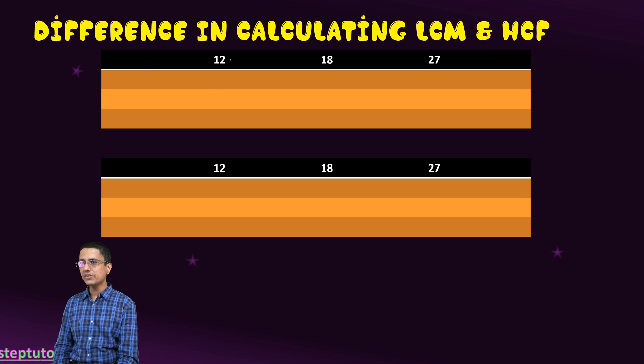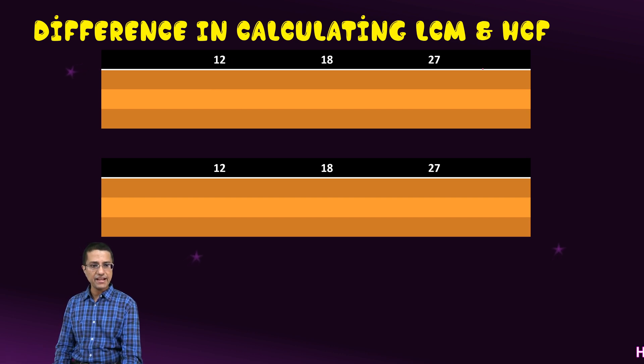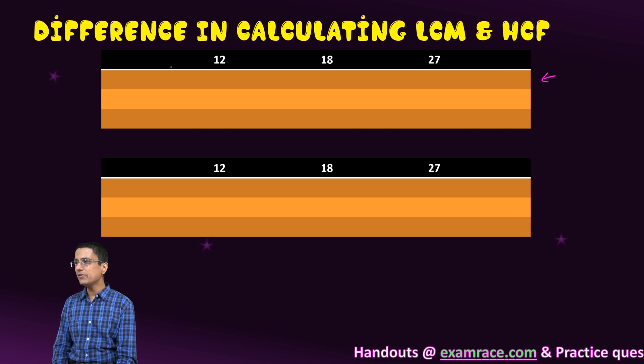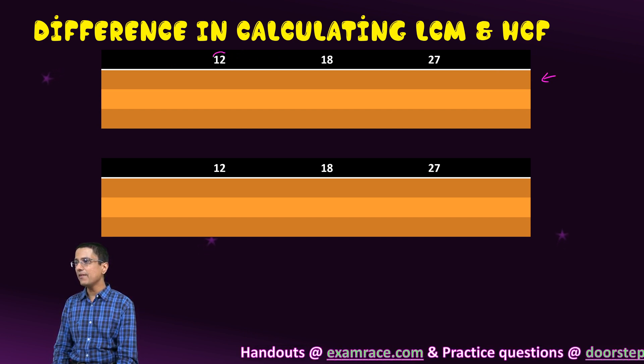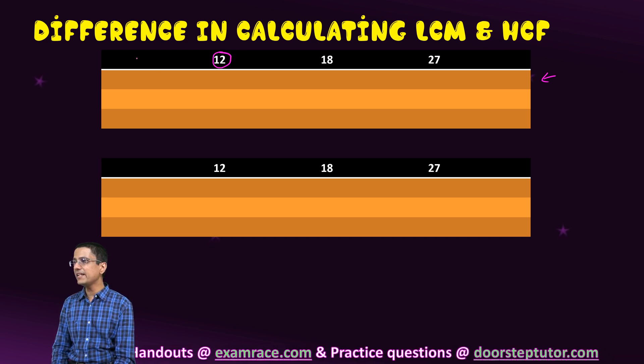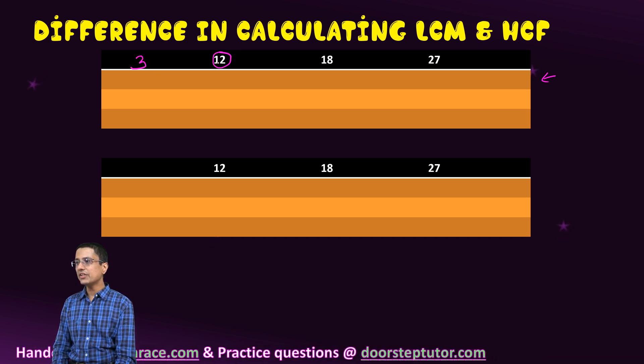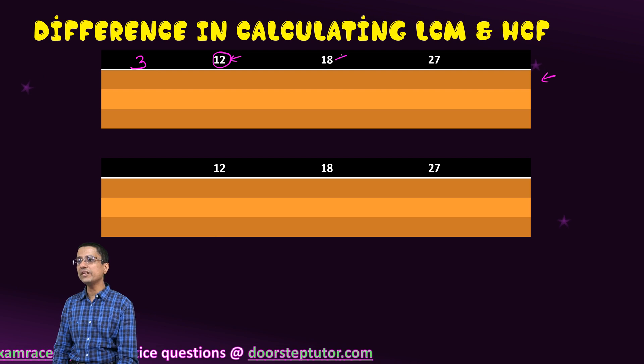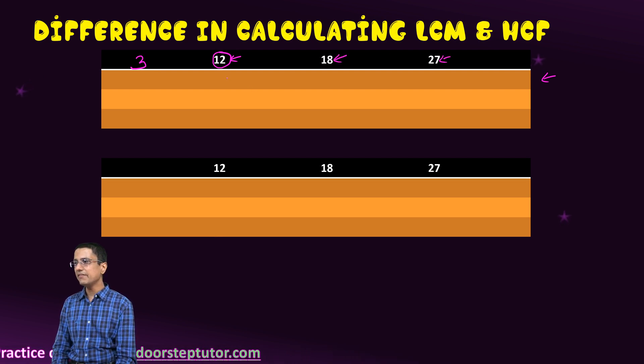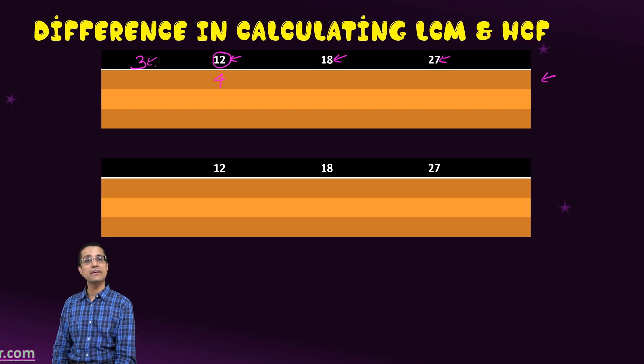Let's try to find out the HCF of these three numbers first. We will first find out the HCF. The key to finding out the HCF is that we have to make sure that the number that we write here is such that it divides each of these numbers. Unless it divides all of these numbers, we will not write it here, we will not do the division.